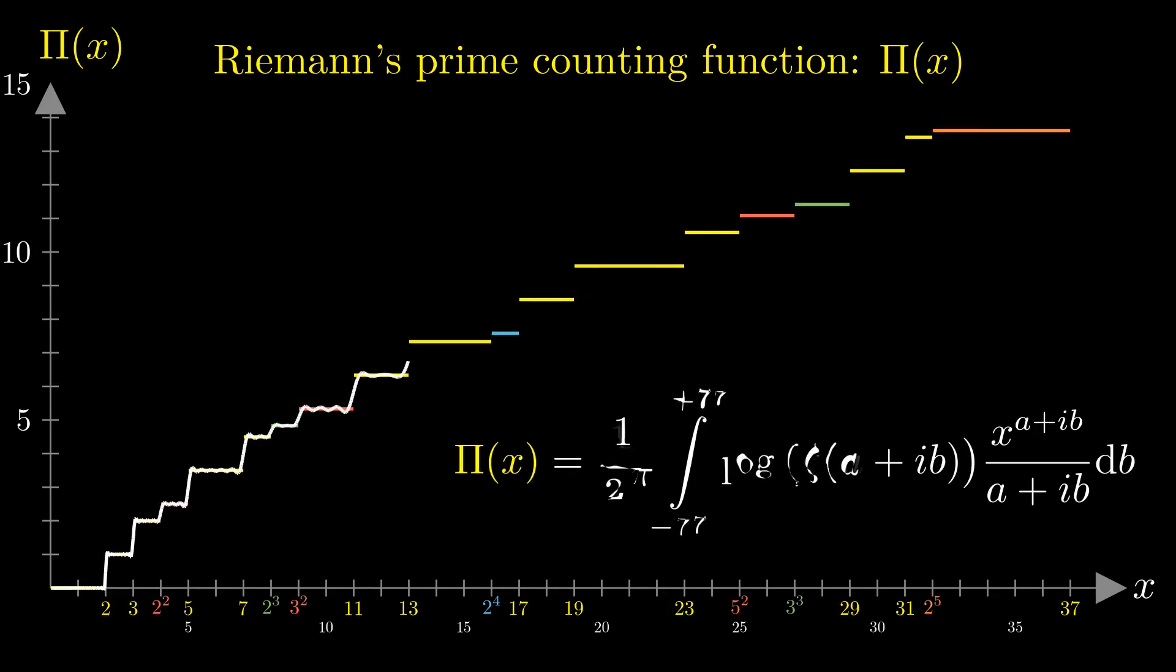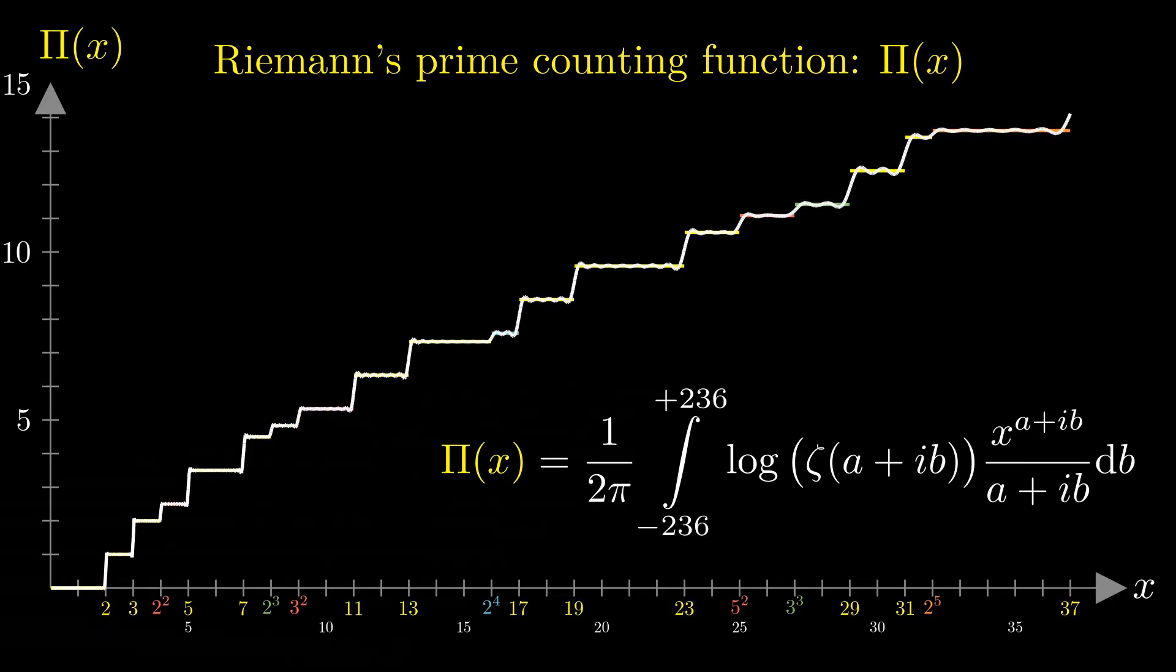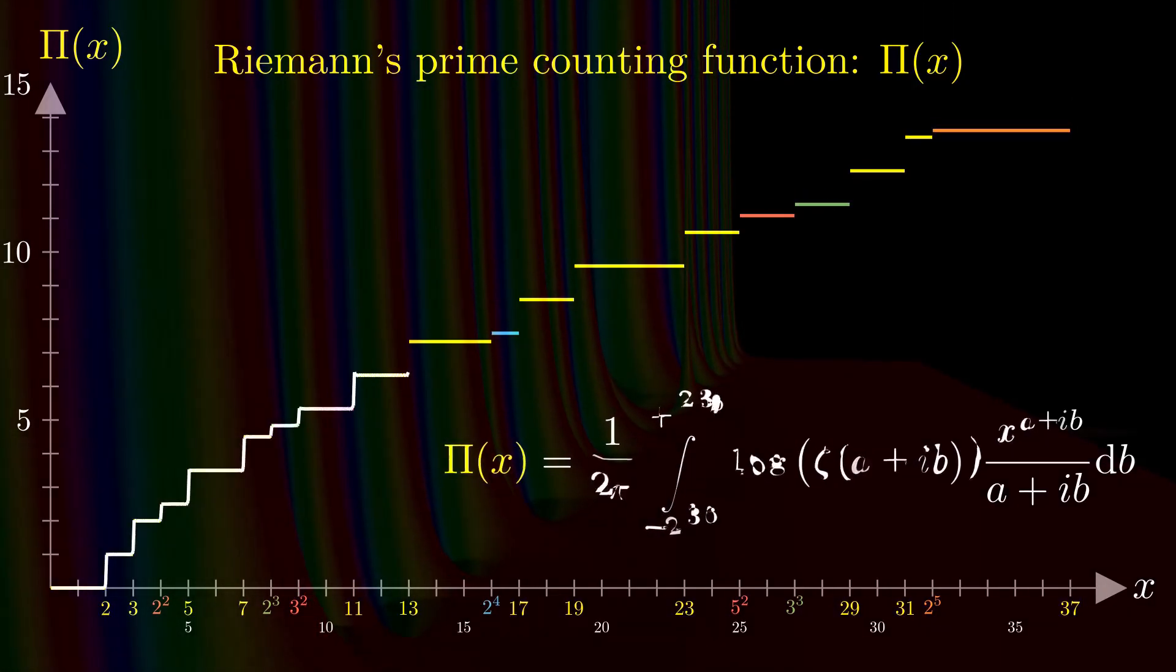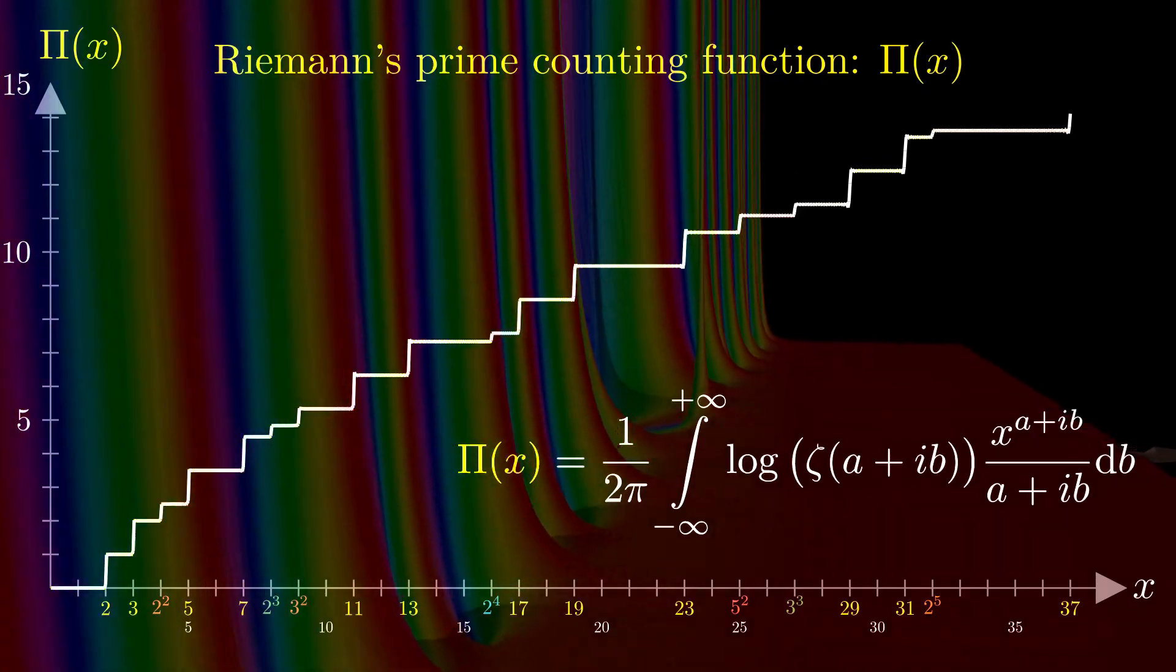Obviously, for each value of x for which one wants to know the prime counting function, the integral has to be calculated from minus infinity to plus infinity. Due to limited resources only a finite range of integration can be performed. However, the approximation of the prime counting function gets better the larger the range of integration is chosen. As we will see shortly, that corresponds to more and more zeros of the zeta function are taken into account.